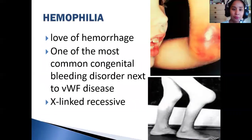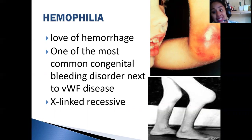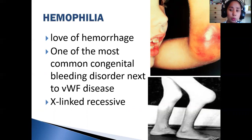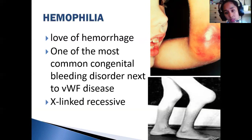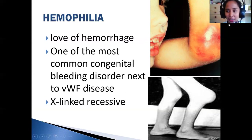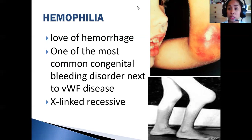First, we have hemophilia. Coming from 'hemo' meaning blood and 'philia' meaning love — so love of hemorrhage. In this condition there is so much bleeding and bruising. One key characteristic or manifestation of hemophilia is hemoarthrosis — bleeding in between the joints of the body. As you can see in this image, there is inflammation, hematoma, and bruising in the elbow.